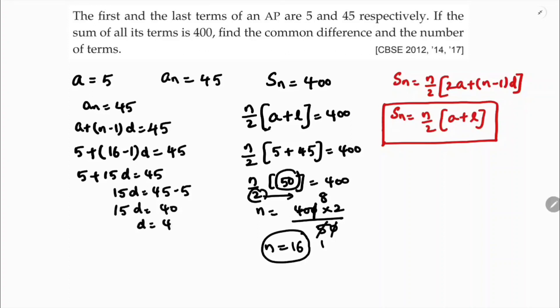So d equals 40 by 15. 5 times 3 and 5 times 8, so d equals 8 by 3.